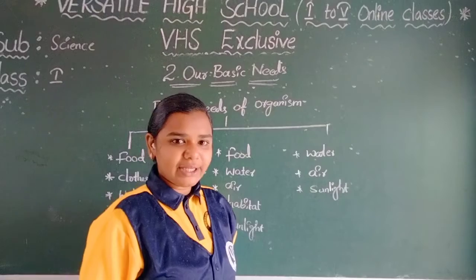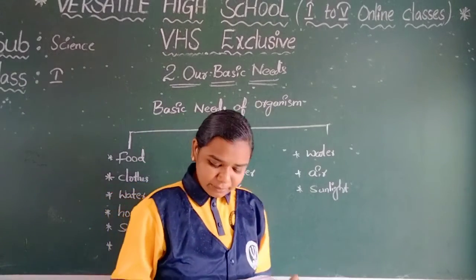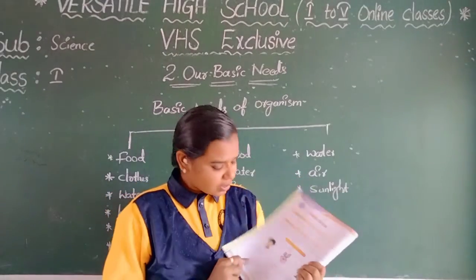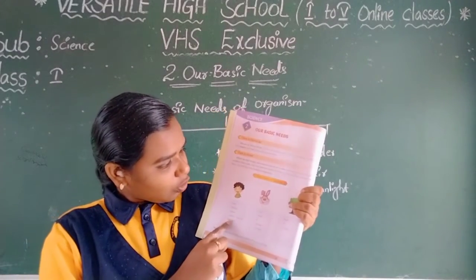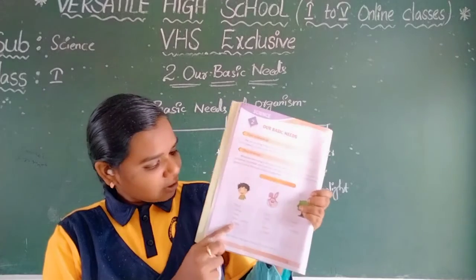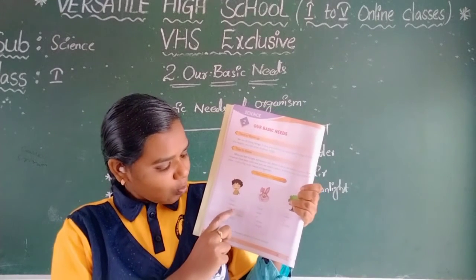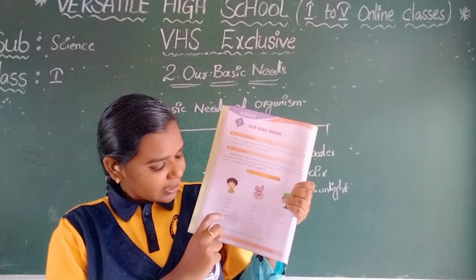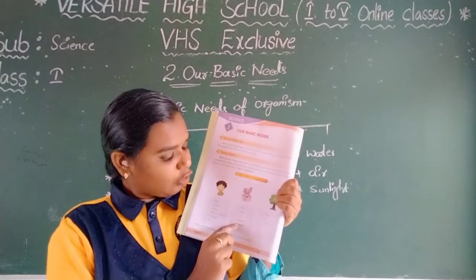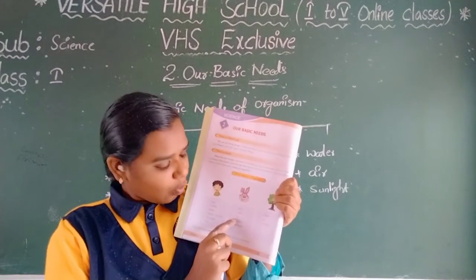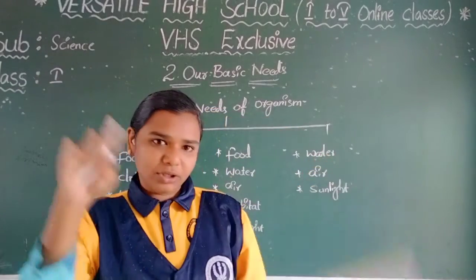Once again, all of you look at the textbook. Open your textbook at the right page. For humans, the basic needs are: food, clothes, water, home and shelter, sunlight, and air. For animals: food, water, air, and habitat — habitat means shelter — and sunlight.